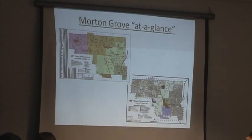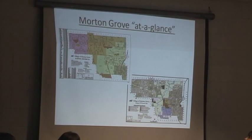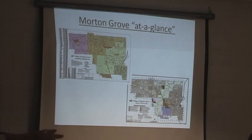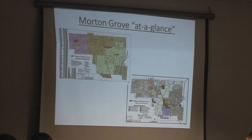I apologize, because of the different colors of the zoning districts, those are very difficult to see. I welcome all of you to go to the village's website and download the maps. The map that Joe showed you a minute ago shows the Waukegan Road TIF area, which is right in this area here.